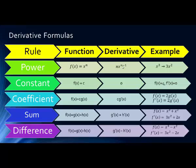Here's an example. If a function equals x cubed, its derivative equals 3x squared. Notice the power 3 comes down in front as a multiplier and the exponent is 1 less than 3, which is 2.